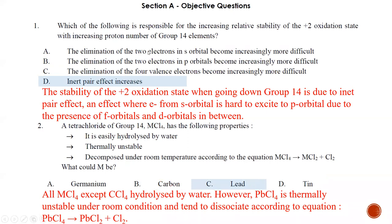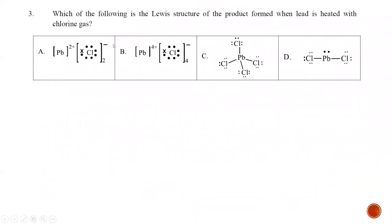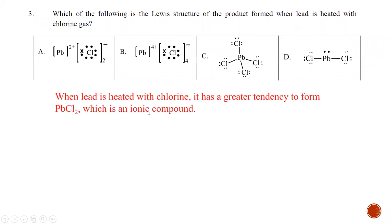Question number three asks for the Lewis structure of the product formed when lead is heated with chlorine. Lead is more stable as a plus two oxidation state, so when heated directly with chlorine it will form the ionic compound PbCl2, because the plus two oxidation state is more stable. The best answer that describes the lead chloride compound formed as a result of this heating is A.